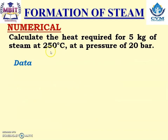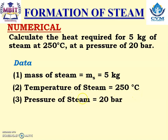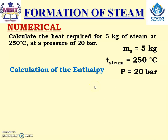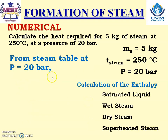Let us solve another numerical. Calculate the heat required for 5 kg of steam at 250 degrees Celsius at a pressure of 20 bar. Data given: mass = 5 kg, temperature of steam = 250°C, pressure = 20 bar. We have to calculate enthalpy. The important question is the identification of type of steam. X is not given, so we cannot immediately tell whether it is wet steam or not. We need to look at the steam table at P = 20 bar.